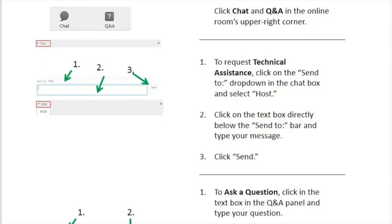Before we get started, I'd like to point out a few features of the webinar software. In the main area of the screen, you can follow along with the presentation materials. Along the right-hand side, you will see a Q&A panel and a chat panel. If you don't, you can click the buttons labeled Chat and Q&A in the upper right corner of the screen to activate the panel. Please use the Q&A panel to submit questions to our speakers. At the end of the presentation, they will take a few minutes to answer your questions. If you experience any technical issues, please use the chat panel to let me know, and I'll troubleshoot the issue with you privately.